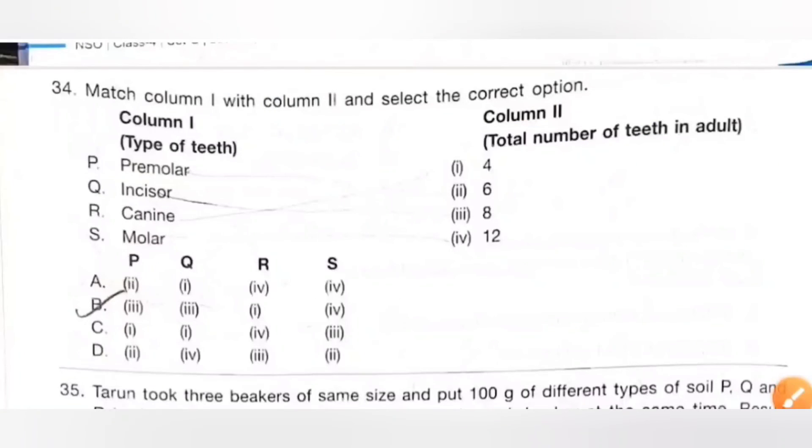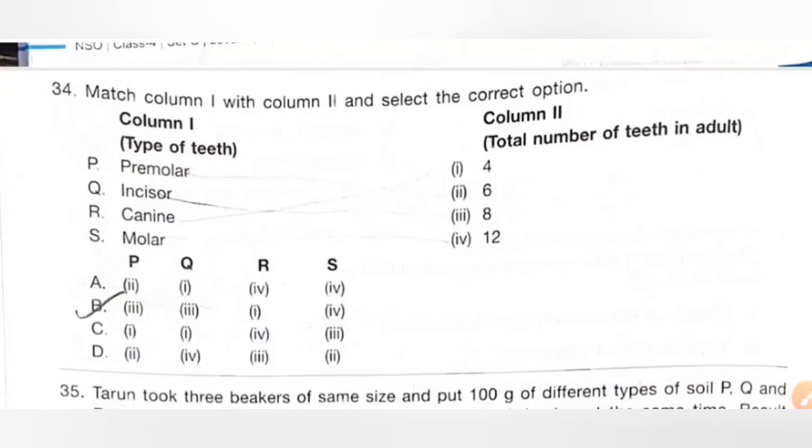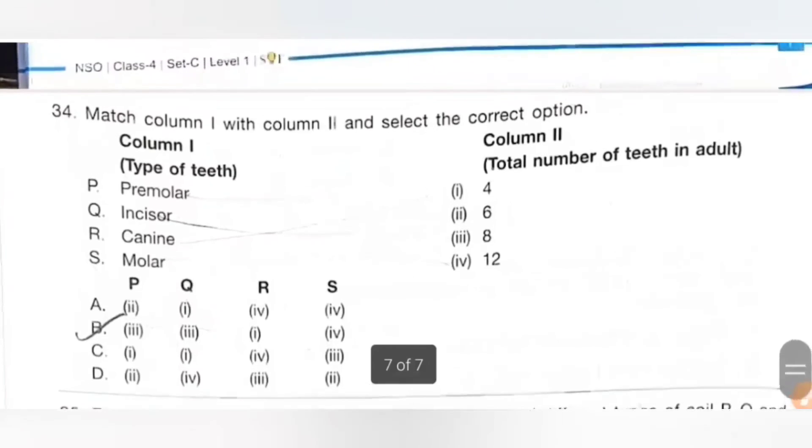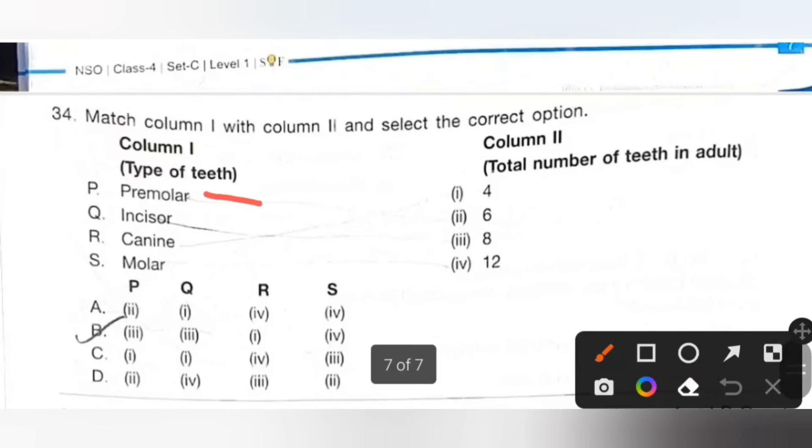Thirty-four: Match column 1 with column 2 and select the correct option. Column 1 is type of teeth, column 2 total number of teeth in adult. So premolar there are total 8, so P-3. And then incisor also 8, so Q-8. Canine, there are total 4 canines, so R-1. Molar 12, so S-4. So option B is the correct answer.